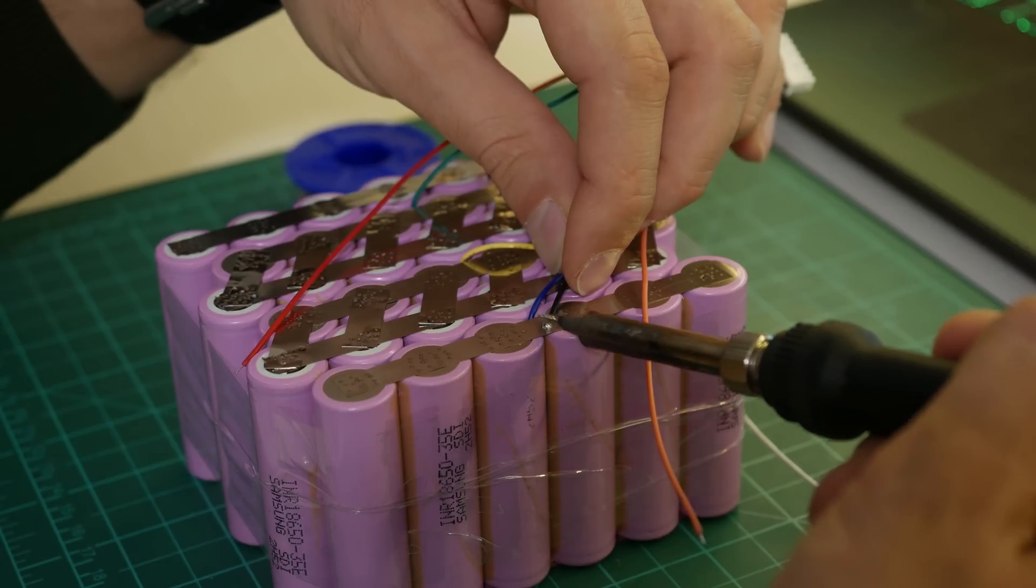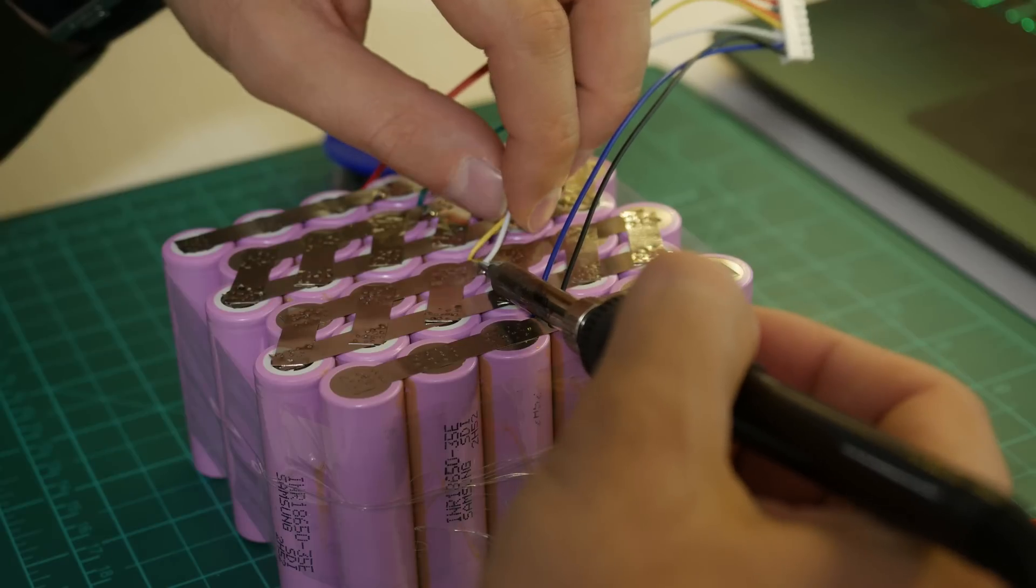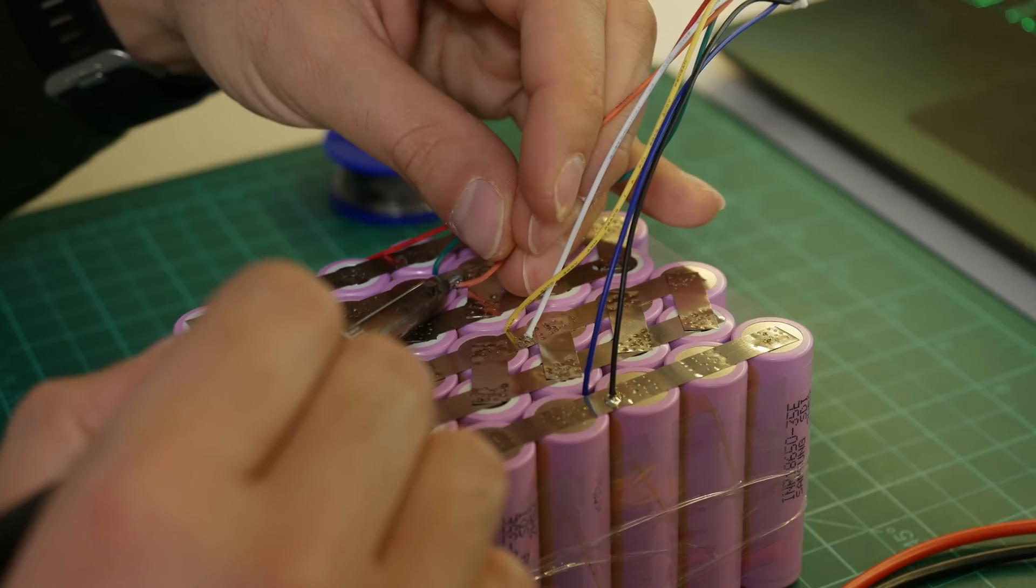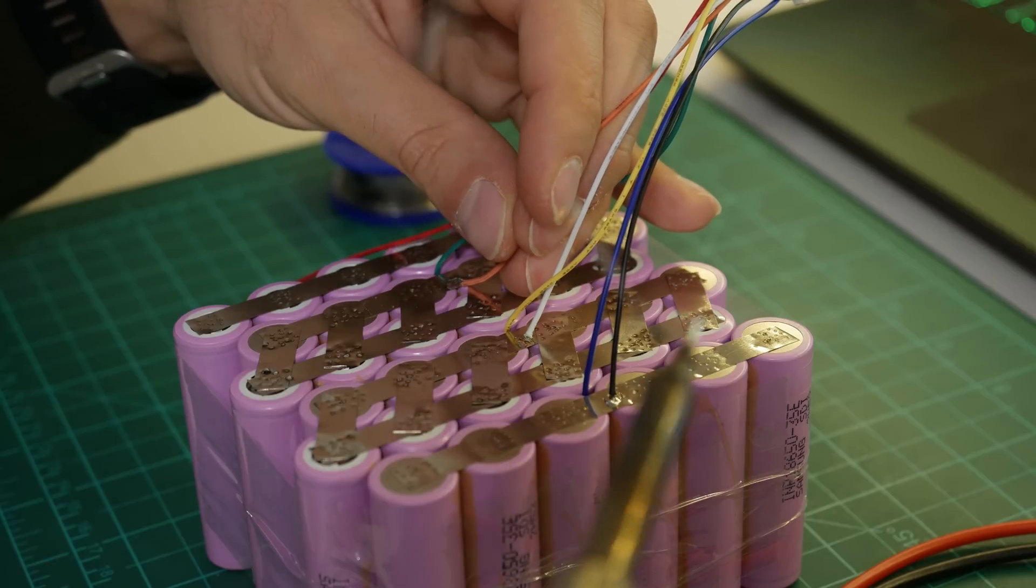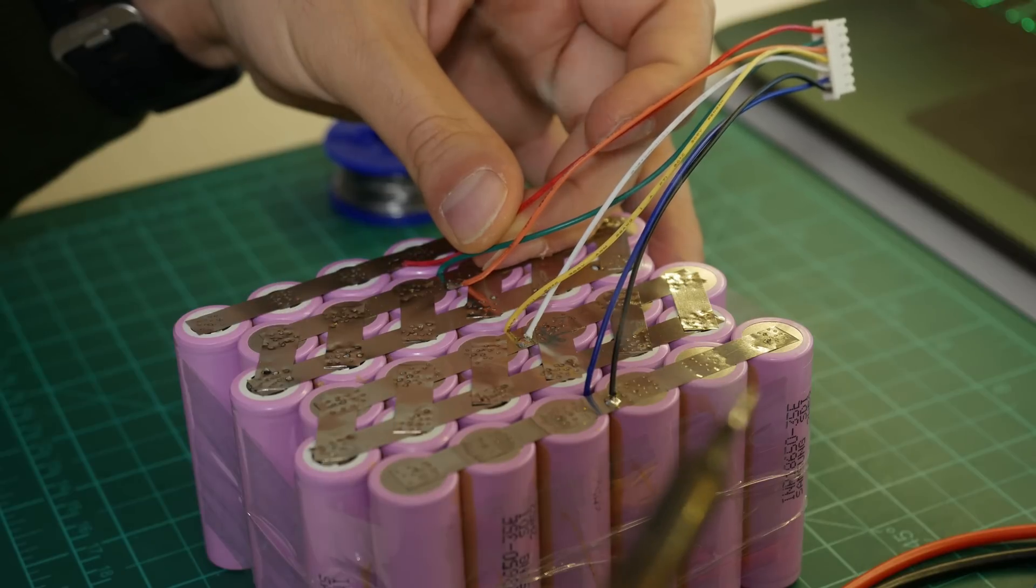Next step was soldering the balance and power wires. I cut the balance wires to size and soldered them to each cell, seven wires in total for a 6S pack. You need to solder one wire at every joint between the cells including at the end plus and minus cells.